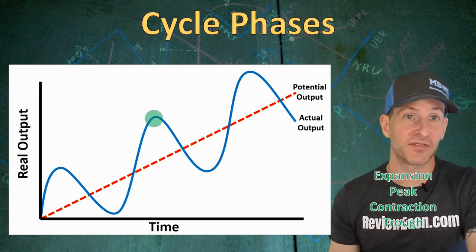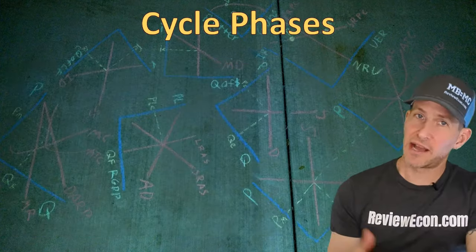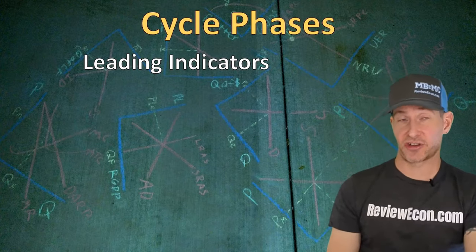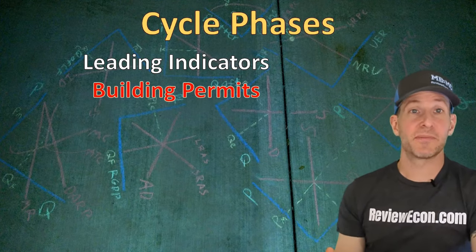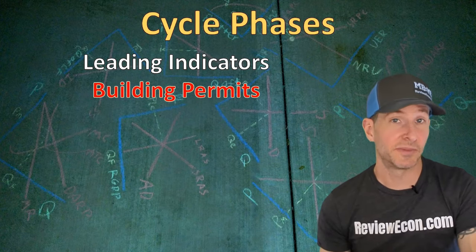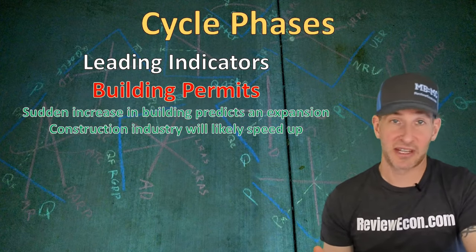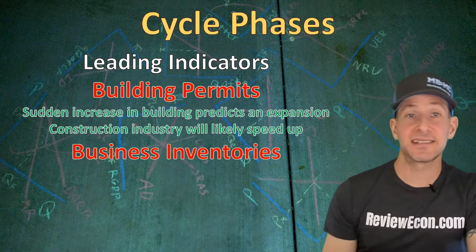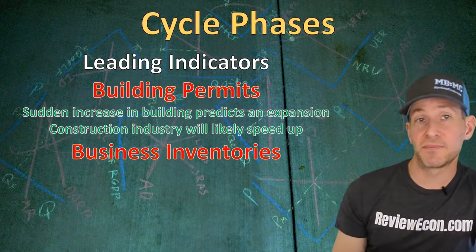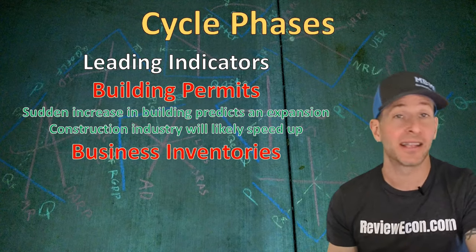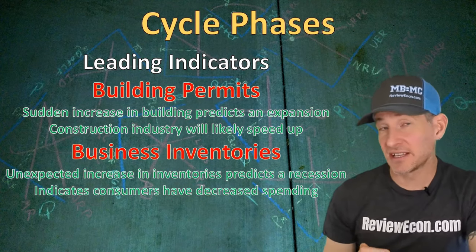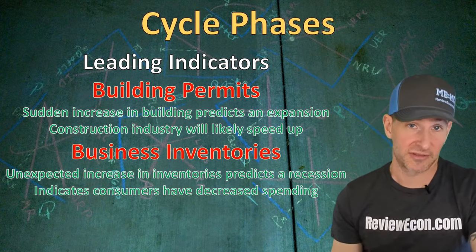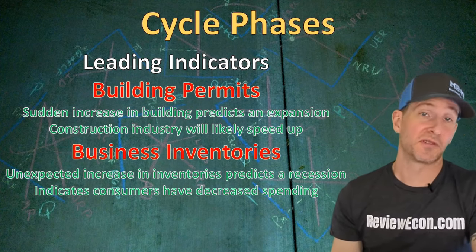The four phases of the business cycle are: first, economic expansion; then a peak; next, economic contraction; and finally, an economic trough — and those four phases repeat over and over again. On your macroeconomics exam, you could see questions about leading indicators. Leading indicators tell us where the economy is headed in the future. One leading indicator is building permits — an increase in permits likely means the construction industry is about to speed up. Another is business inventories: an unexpected increase in inventories is often a sign the economy is about to contract, because consumers haven't been buying all that's being produced, and businesses will reduce hours or lay off workers as a result.